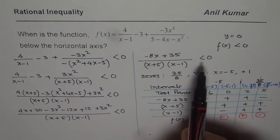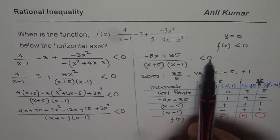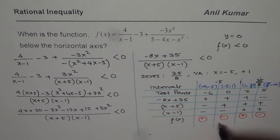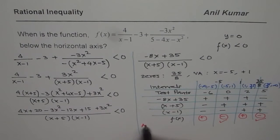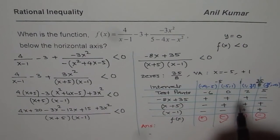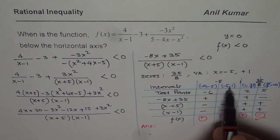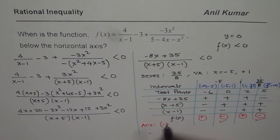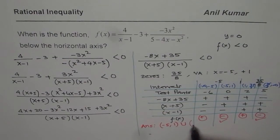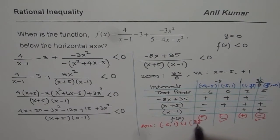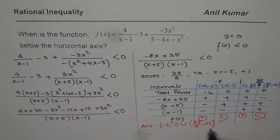We are looking for an answer which is less than 0. That means negative interval. So that gives us two intervals as our solution. And so we can write down our answer as it is between minus 5 and 1, union 35 over 8 to positive infinity.